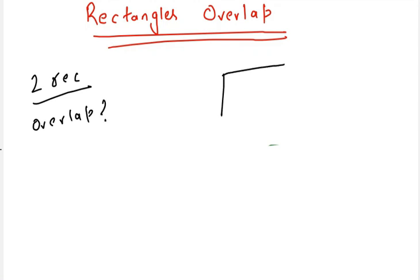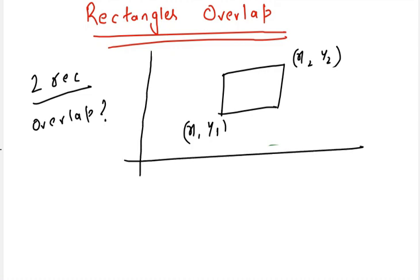Now for the representation of rectangles, we have been given two coordinates. One is the bottom left coordinate, let's say x1 and y1, and another is the top right corner, that is x2 and y2. It is also given that the sides of the rectangle are axis-aligned, which means they are parallel to the x-axis and the y-axis.